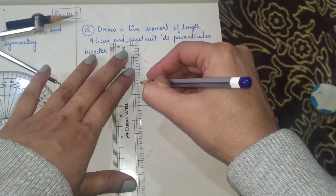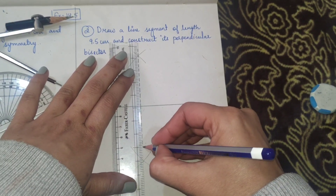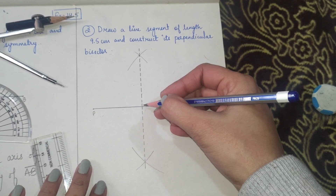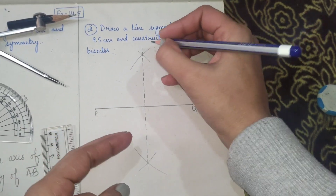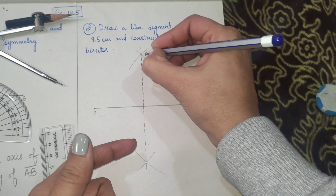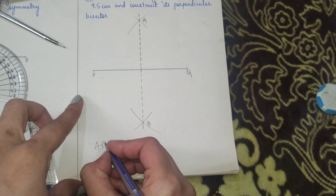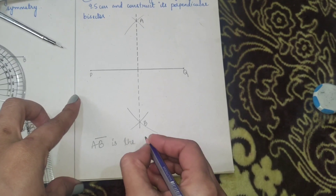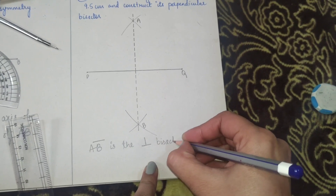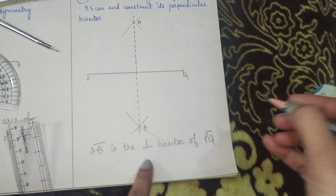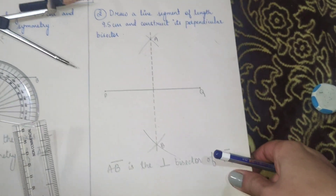We got two points of intersection of the arcs - one above and one below line segment PQ. We'll join these two points either by a solid line or dotted lines. I'll name this point A and this point B, and write: AB is the perpendicular bisector of PQ. You can use the perpendicular symbol in the exam as well. Now let's move on to question three.